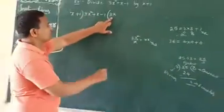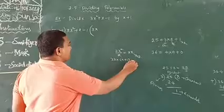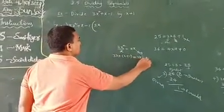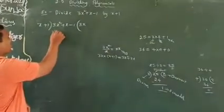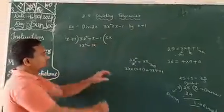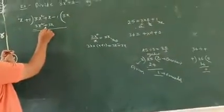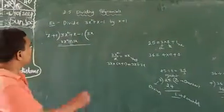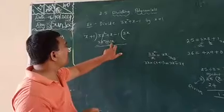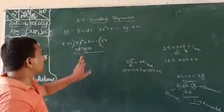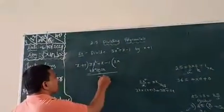Now multiply these two: 3x into x plus 1. Or x plus 1 into 3x. What is the value? 3x into x is 3x squared, and 3x into 1 is 3x. Write 3x squared plus 3x below the dividend. Now subtract. Whenever you are subtracting, symbols will change. Plus in minus becomes minus. 3x squared minus 3x squared gets cancelled. Now plus x, that is 1x, minus 3x. 3 minus 1 is 2. So we get minus 2x. Carry forward minus 1 as it is.